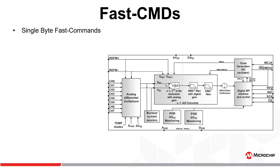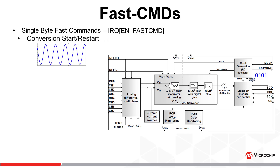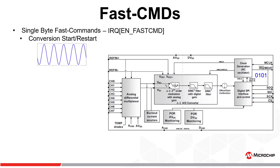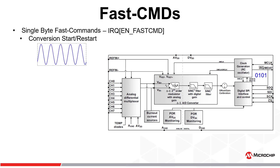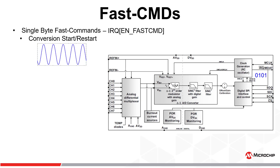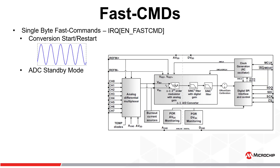In addition to the standard read-write commands, the SPI interface also offers a series of single byte fast commands, which provide a quick and easy way to perform operations such as a device reset or conversion start, as well as entering power saving states such as standby, shutdown, or full shutdown modes. There are five fast commands available when the fast command enable bit of the IRQ register is set. When in standby mode, execution of the conversion start or restart fast command results in the immediate transition to conversion mode. When in ADC shutdown mode, this fast command invokes the ADC startup timer for a countdown of 256 digital master clock periods before resuming conversions.